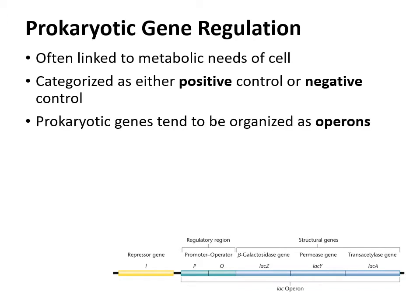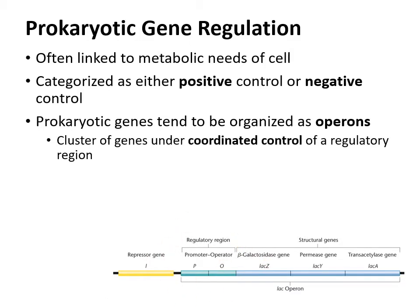Keep in mind that prokaryotic genes tend to be organized in operons — multiple genes together under the control of one regulatory region. Now with any of this kind of regulation, there are two terms you have to distinguish. Some regulators can be cis-acting, whereas others can be trans-acting. Cis-acting means the regulator is actually a DNA sequence on that chromosome involved in regulation.